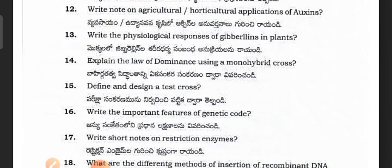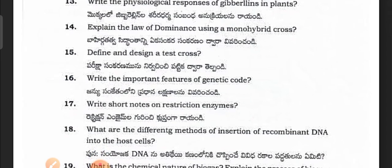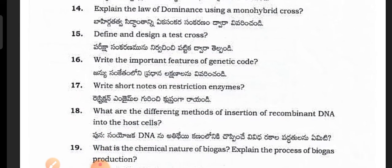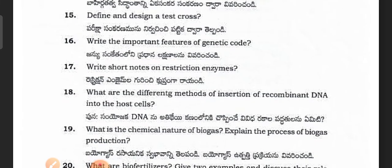Write about the physiological responses to gibberellins in plants. (Mokkule gibberinla shrida dharma sambandha anukri rayandhi.) Explain the law of dominance using a monohybrid cross. (Bahigir tattva siddhantani ekha sankara sankar nadhar river in chandhi.) Define and design a test cross. (Pariksha sankar nirvachinji patikadwara telpandhi.)